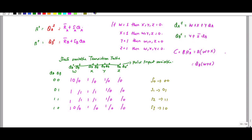For this case QB is 1 and Z bar will be 1, giving output 1.